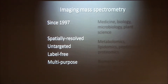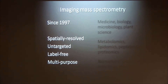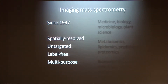Imaging mass spectrometry is a relatively new analytical technique developed about 15 years ago. It is spatially resolved. It is untargeted, meaning we can analyze hundreds to thousands of molecules in one run. It is label-free — we don't need to attach any labels to our molecules. And it is totally multipurpose, as I will show with several examples today.